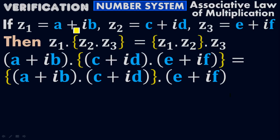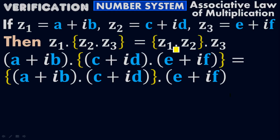My Z₁ is A + iB, Z₂ is C + iD, and Z₃ is E + iF. Plug in Z₁ = A + iB, Z₂ = C + iD, and Z₃ = E + iF on both sides of the equation.